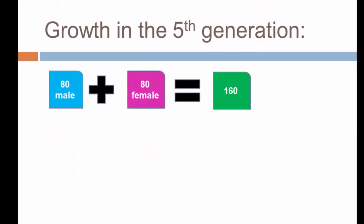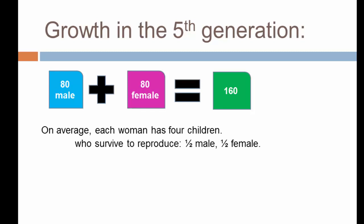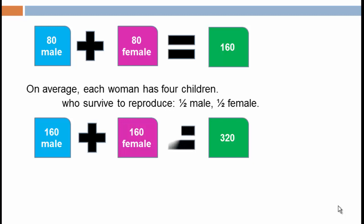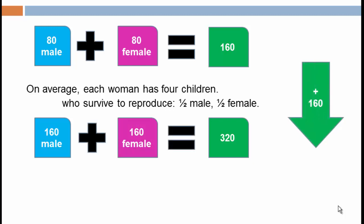For the fifth generation, starting at a population of 160, we take those 80 females and multiply by four. Our fifth generation population is now 320, made up of 160 males and 160 females, and our increment of growth is 160 individuals. You can see that with each succeeding generation we're adding more and more individuals.